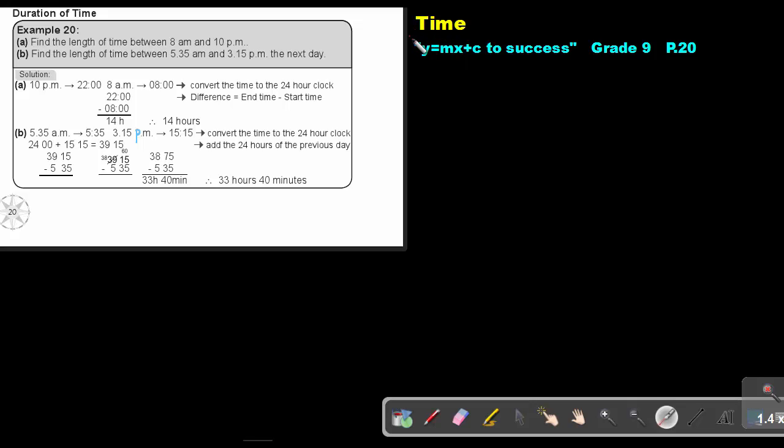Part 17. We are going to continue with time. You will find this on page 20 in the Namibia Mathematics Grade 9 textbook Y equals MX plus C to success. We are going to look at the duration of time. Example 20: Find the length of time between 8am and 10pm. Now, first you must convert the time to the 24 hour clock. This is in the 12 hour clock.